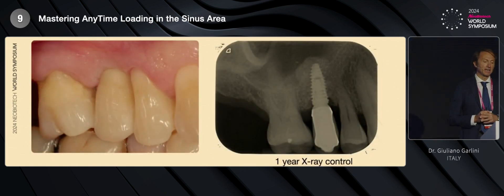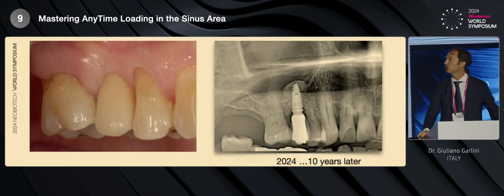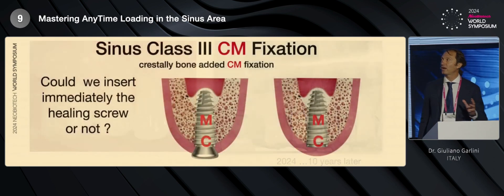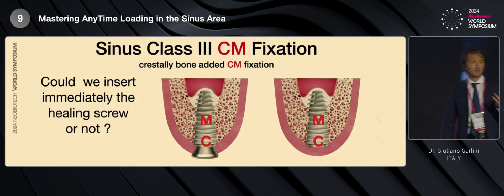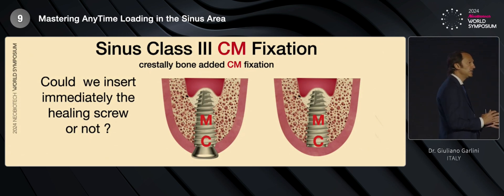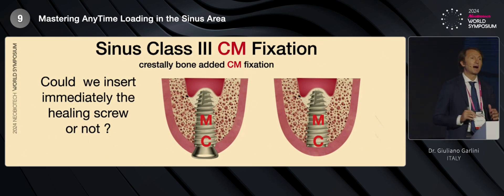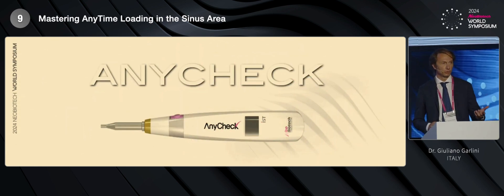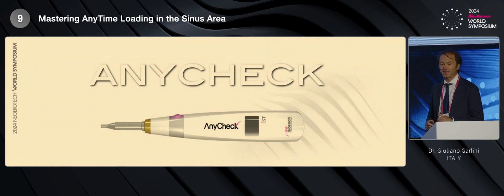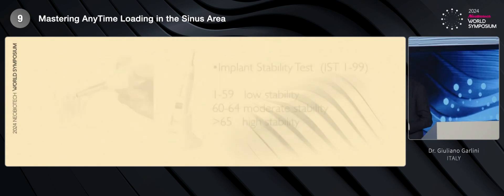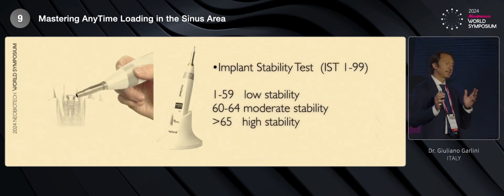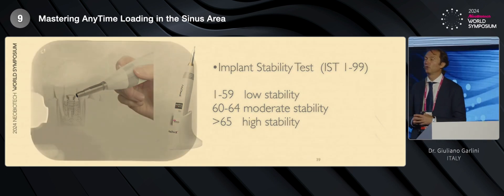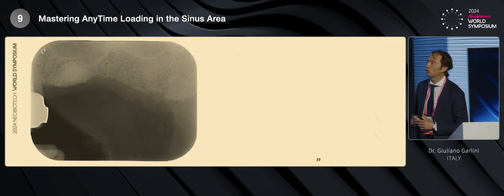This was the clinical and X-ray situation after one year, but I can show you the clinical situation and the radiological situation after ten years. So, the question is: in sinus class 3 with CMI fixation, could we insert immediately the healing screw or the provisional? About the healing screw, we have no doubt now, because we can use these very important and interesting tools. I know that you are familiar with AnyCheck, so I don't want to explain it, but if you have more than 70 to 65 EIST, you can load or you can put the healing screw over your implant inserted into the sinus.